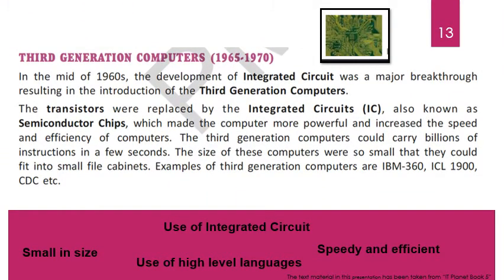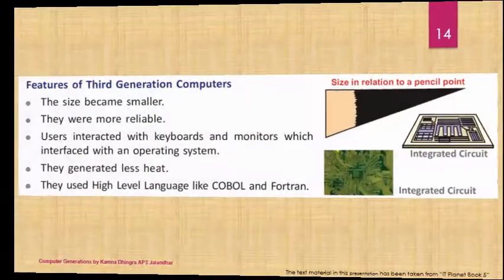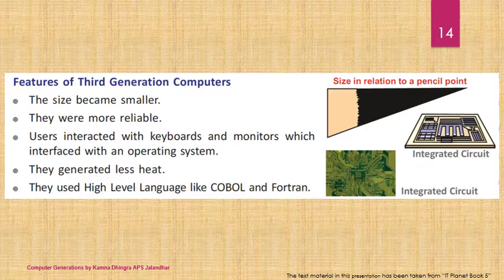In the mid-1960s, the development of ICs — integrated circuits — was a major breakthrough resulting in the introduction of third generation computers. Transistors were replaced by integrated circuits. An IC can hold millions of transistors. ICs, also known as semiconductor chips, made computers more powerful and increased speed and efficiency. These computers could carry billions of instructions in a few seconds and were smaller and more reliable than the first two generations.